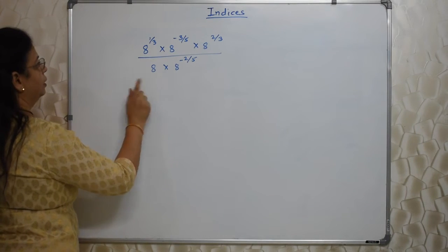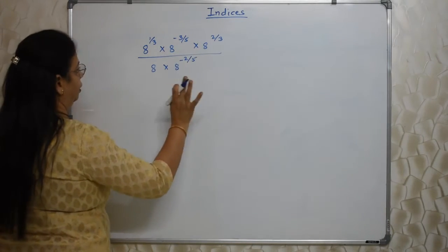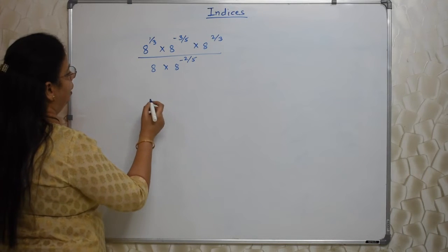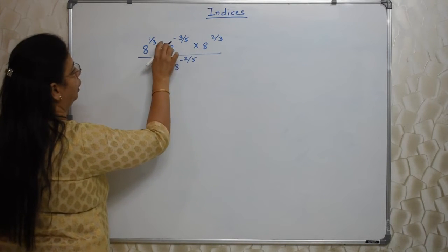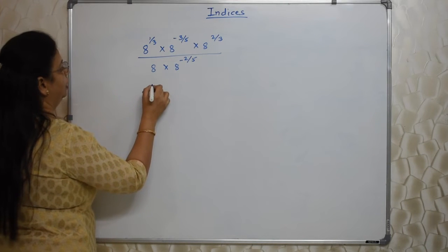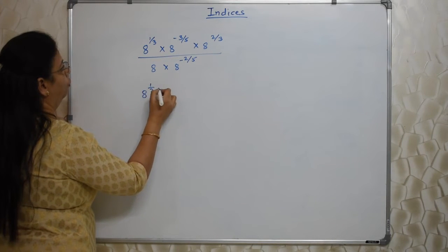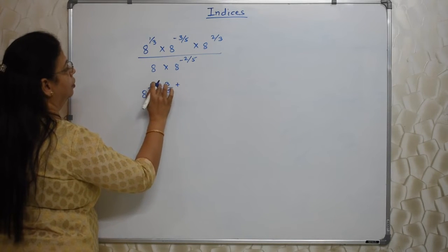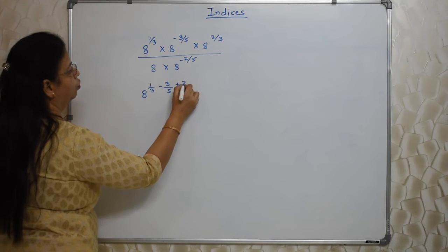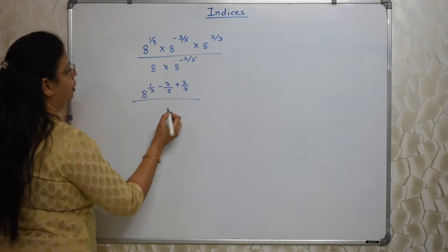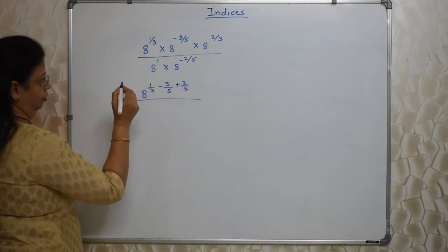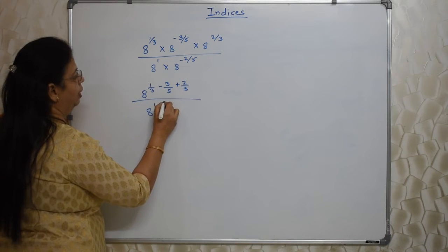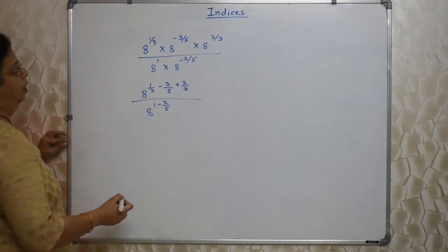See students, I have written the next sum here. All are base 8, so no problem. Only thing is we have to apply the rules of indices. All are in multiplication, so we need to add the index of each number. Similarly down here, 8 means 8¹. When number is there, it is raised to 1. So 8^(1 - 2/5).